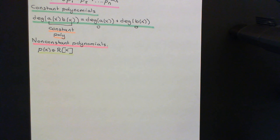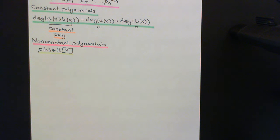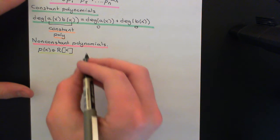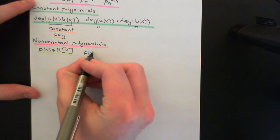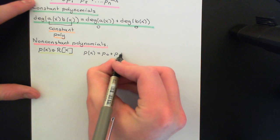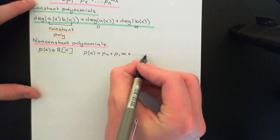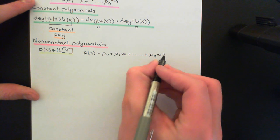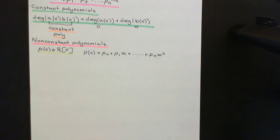How are we going to approach this? We know that P of X is a non-constant polynomial. I'm going to modify it into a form that's easier to work with — I'm going to turn it into a primitive polynomial. Let's write our polynomial P of X explicitly: P0 plus P1 times X, all the way up to Pn times X to the n, where the degree of the polynomial is n.